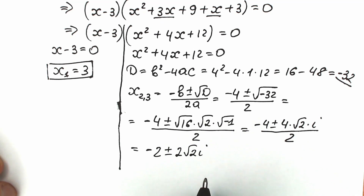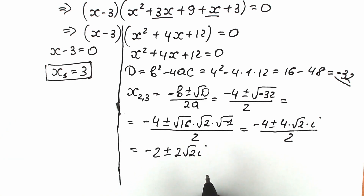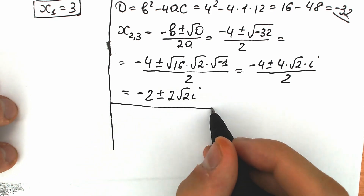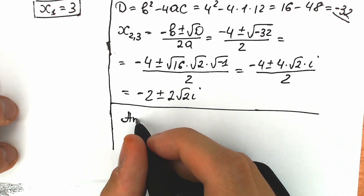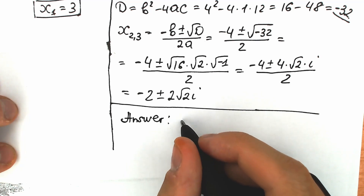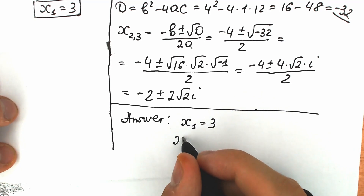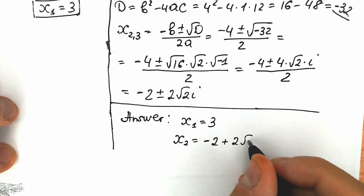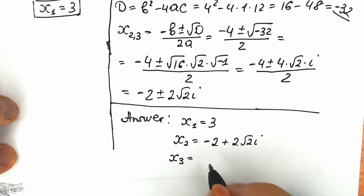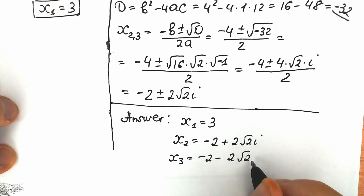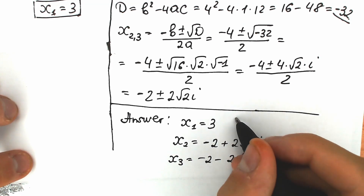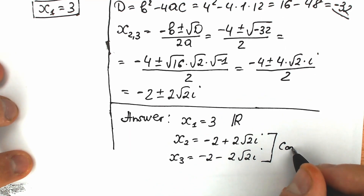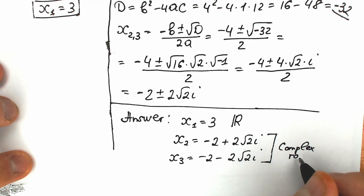Now let's write our final answer. We have three roots: x₁ = 3 (real number root), x₂ = -2 + 2√2·i (complex root), and x₃ = -2 - 2√2·i (complex root). So in total: one real root and two complex roots.